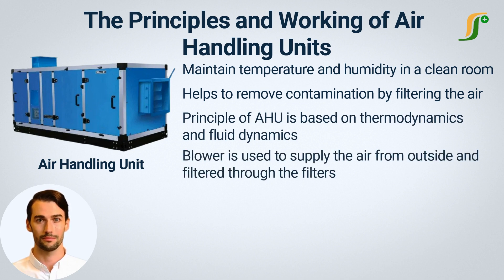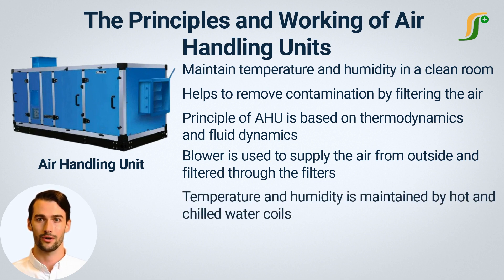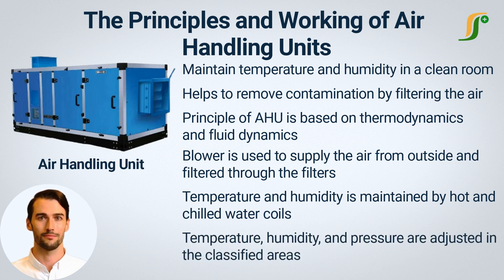A blower is used to supply air from outside and filter it through filters to remove contamination. The air is then cooled or heated as per the required temperature before flowing to the clean room area. This is done by the hot and chilled water coils present inside the air handling unit. Temperature, humidity, and pressure are adjusted in the classified areas by the air handling units. Air contamination is also removed by filtration, which helps maintain the clean area classes.